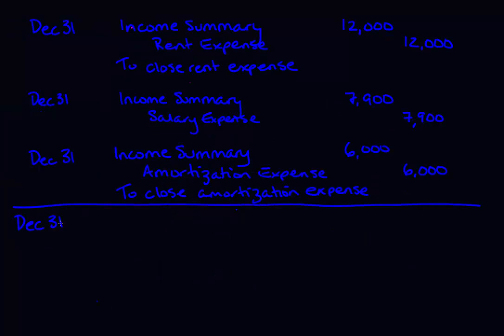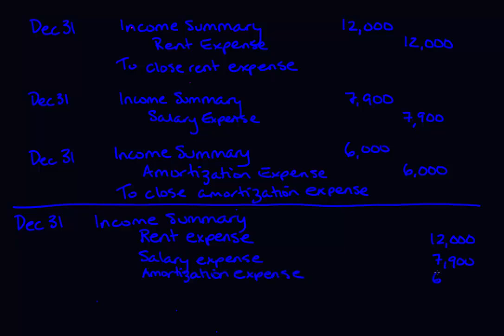This combined journal entry would get you to the exact same place. Debit income summary — I'm leaving a blank spot for the total for now — and the credits are: credit rent expense $12,000, credit salary expense $7,900, and credit amortization expense $6,000. Now I'm going to add up all the credits and put the debit to income summary for the total of all the credits, making sure debits equal credits. The description would be: to close expense accounts.